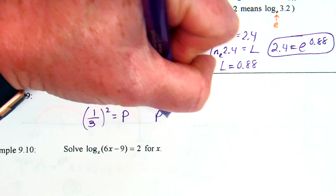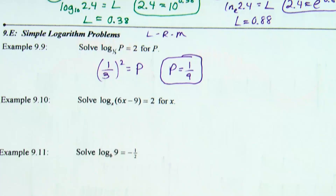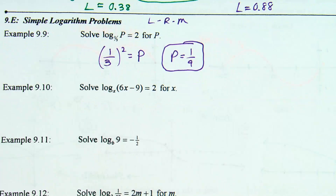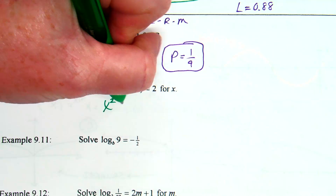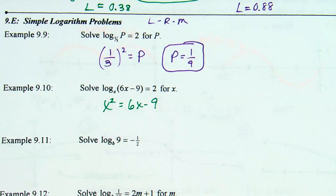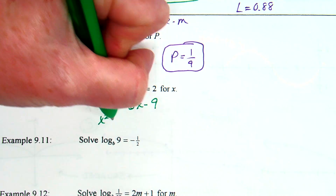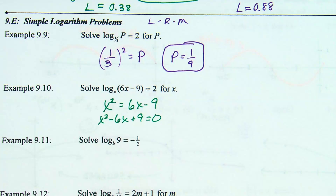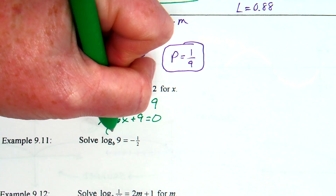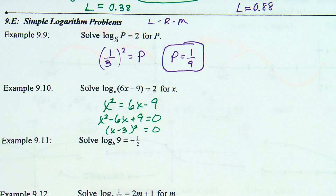Example 10: using left-right-middle gives x squared equals 6x minus 9. To solve, make it equal 0: x squared minus 6x plus 9 equals 0. Factor into (x minus 3)(x minus 3). So x equals 3.